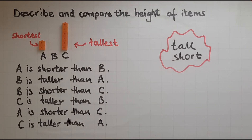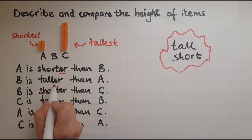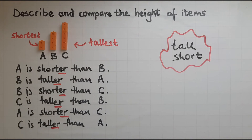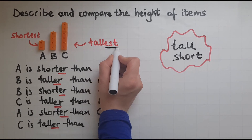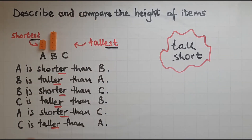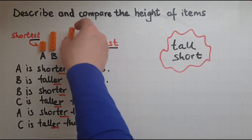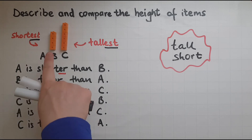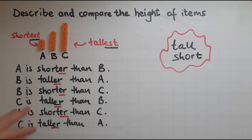So when I compare two items together, I'll say shorter or taller, using '-er' at the end. Whereas if I am comparing three items and want to find which one is the tallest or shortest, I use '-est' at the end. So A is the shortest of them all.